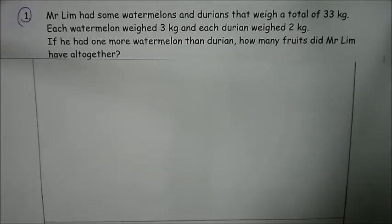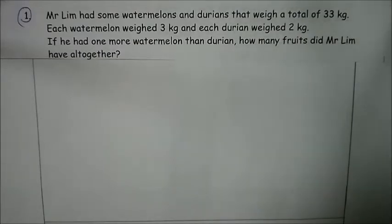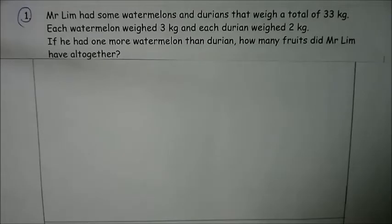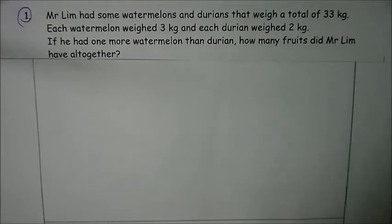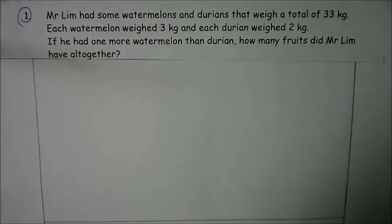Good morning students. Today we are going to learn how to use the heuristic 'guess and check' to help us solve a question. Before we learn how to use it, let us look at the question. Mr. Lim had some watermelons and durians that weigh a total of 33 kg. Each watermelon weighs 3 kg and each durian weighs 2 kg. If he had one more watermelon than durian, how many fruits did Mr. Lim have altogether? I've mentioned that we are going to use the guess and check method to solve the question.